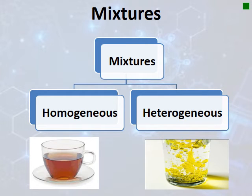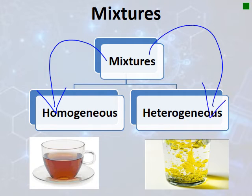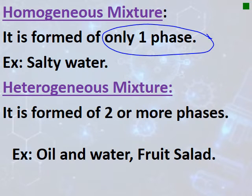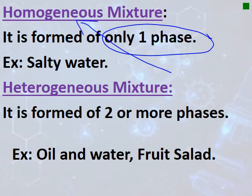Mixtures are divided into two groups: homogeneous and heterogeneous. A homogeneous mixture forms only one phase — it has only one appearance. For example, salty water: if we mix salt and water and stir them, they appear as one phase. Similarly, mixing water and alcohol forms only one phase, so both are classified as homogeneous mixtures.